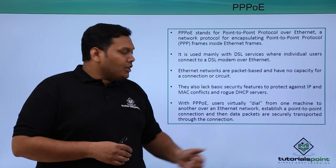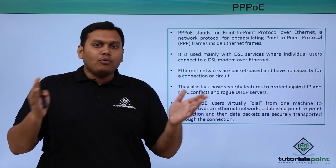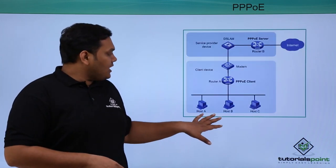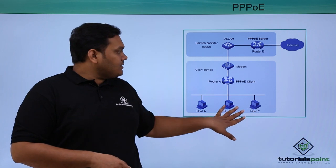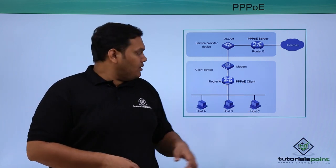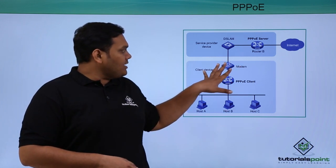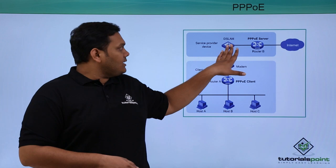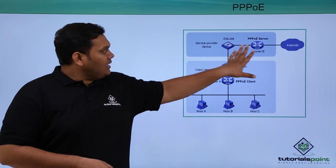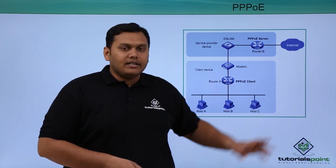PPPoE uses a virtually dialed connection to another machine so that point-to-point links are established. In the diagram, hosts A, B, and C are connected to Router A, which has the PPPoE client. From there it connects to the modem — the client device — then to the DSLAM, which is a service-provider device, and then to a router with the PPPoE server, and finally to the internet.